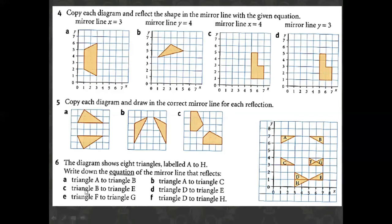Question six: find the equation of the mirror line. For shapes A and B, there is a two-box difference so we draw a line in the middle. For shape C, the mirror line is at x equals 4 because that vertical line sits at x equals 4. For shapes A and C, the difference is two boxes vertically, so we say y equals 5 because that line is on the y-axis at 5. Thank you so much — you can now draw the remaining questions the same way.